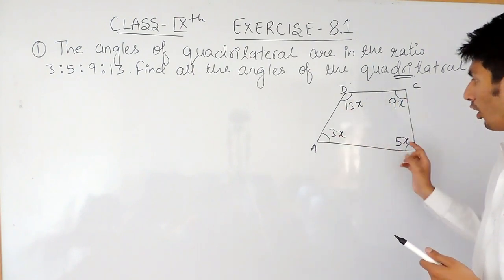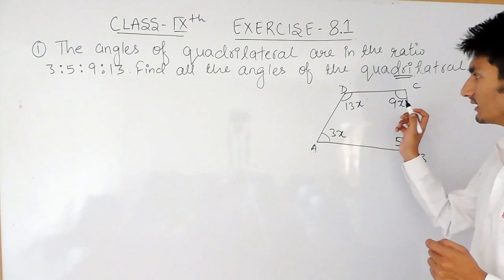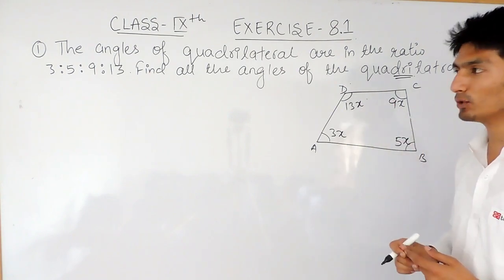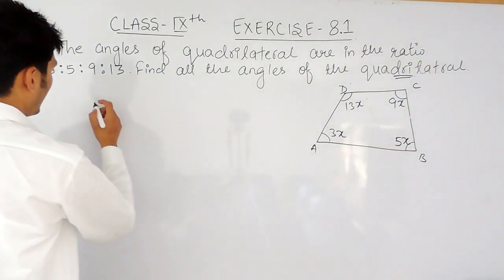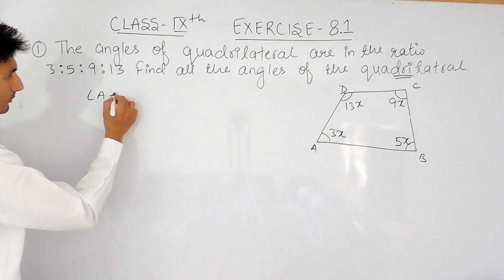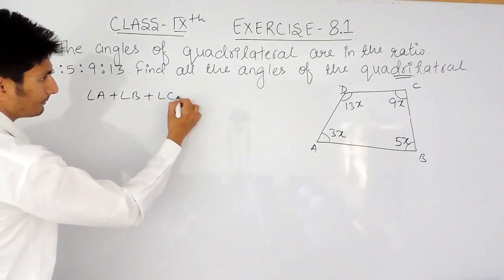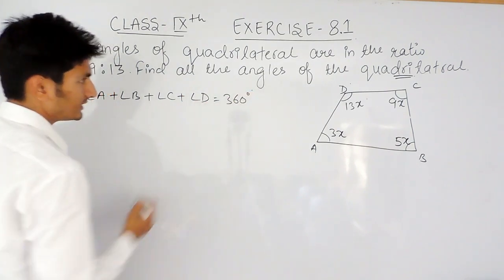you know all 4 angles of a quadrilateral and we know that the sum of all the angles in our quadrilateral is equal to 360 degrees. So, here, I can say that the sum of all the angles, that is angle A plus angle B plus angle C plus angle D is equal to 360 degrees.